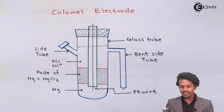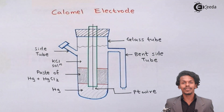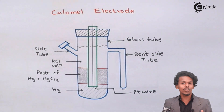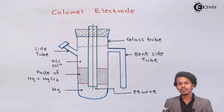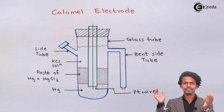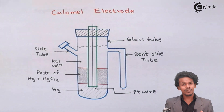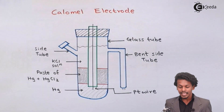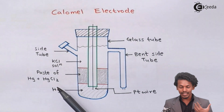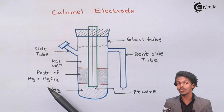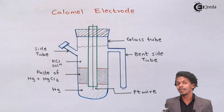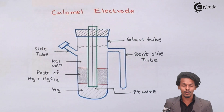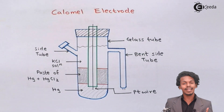This is the main calomel electrode we are discussing. The word 'calomel' itself has a specific meaning: when mercury is combined with a metal it is known as an amalgam, but when mercury is combined with non-metals like Cl₂, it is called calomel. Therefore, this overall electrode is called the calomel electrode. Let us now see what its functions are.